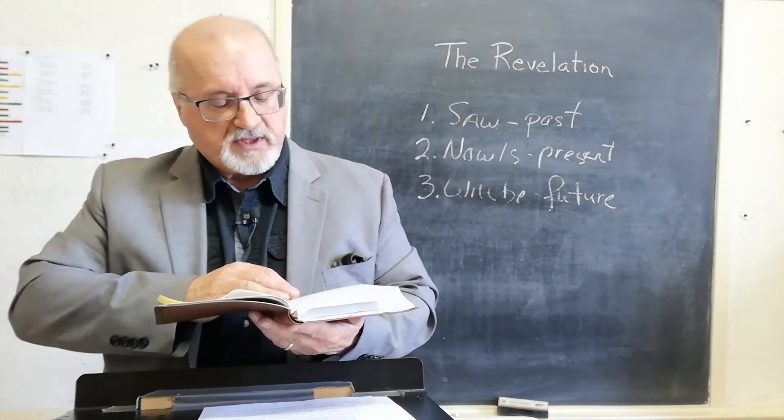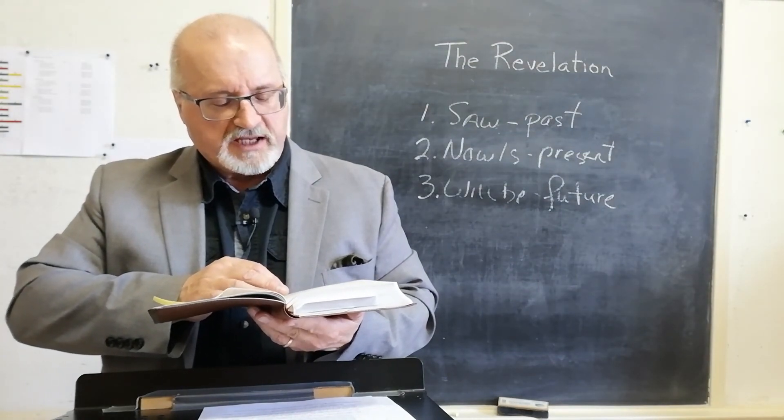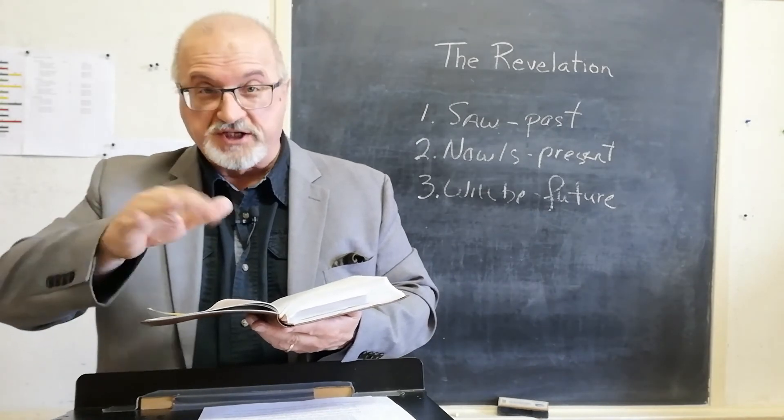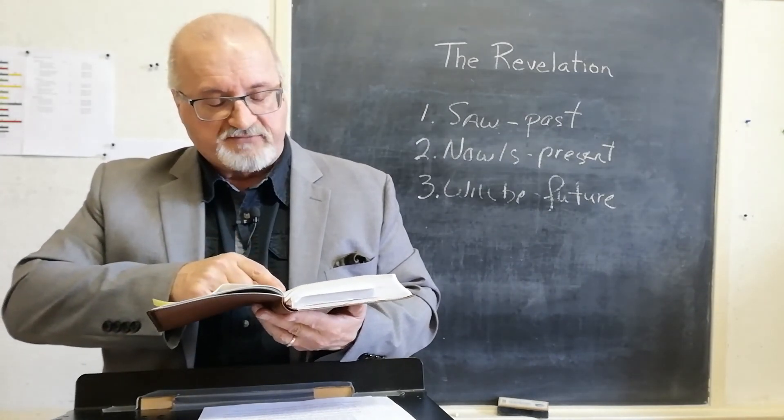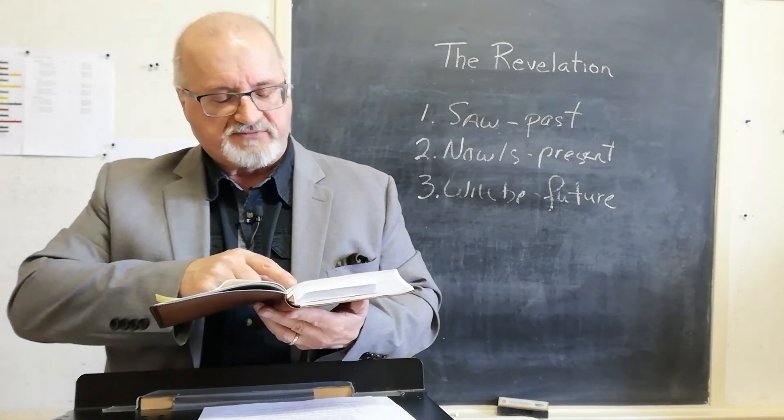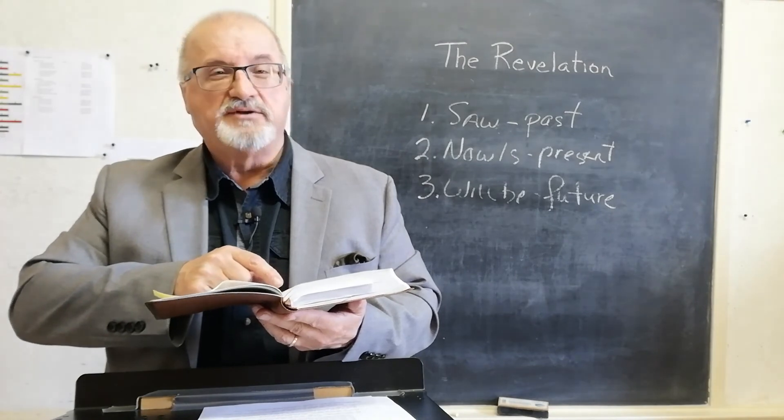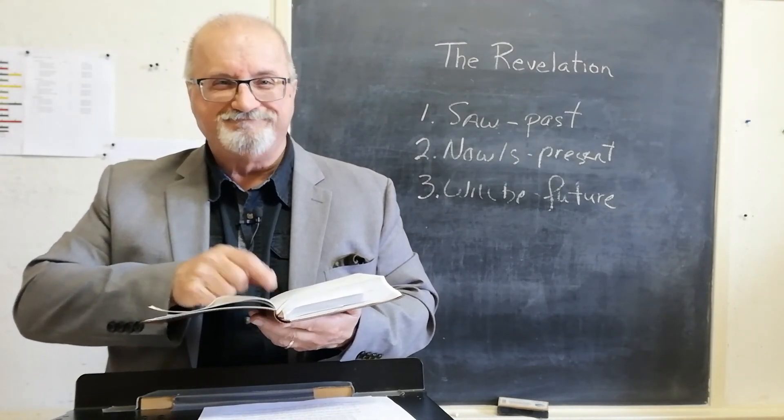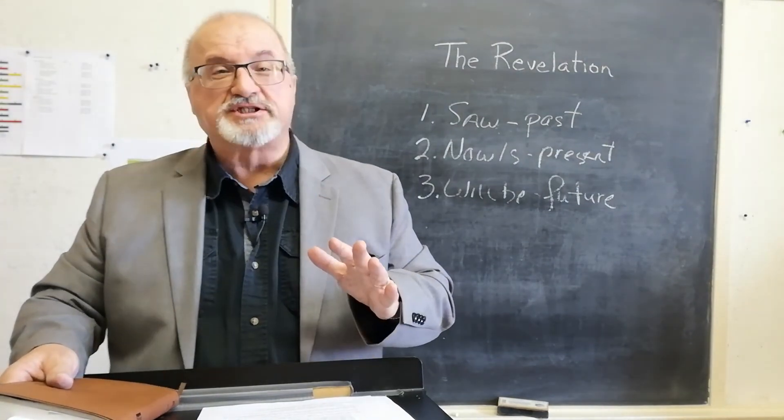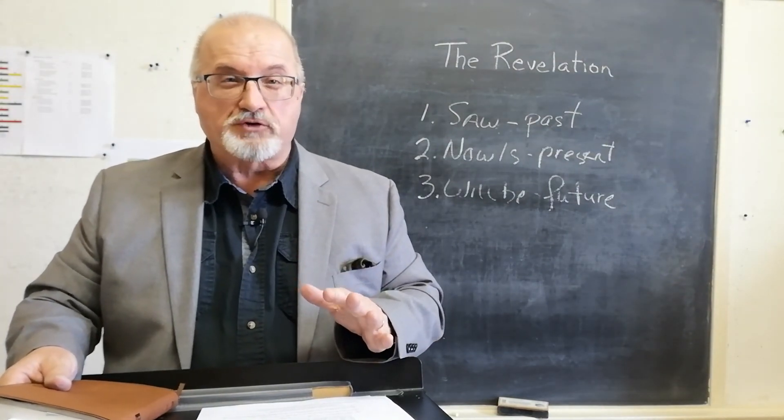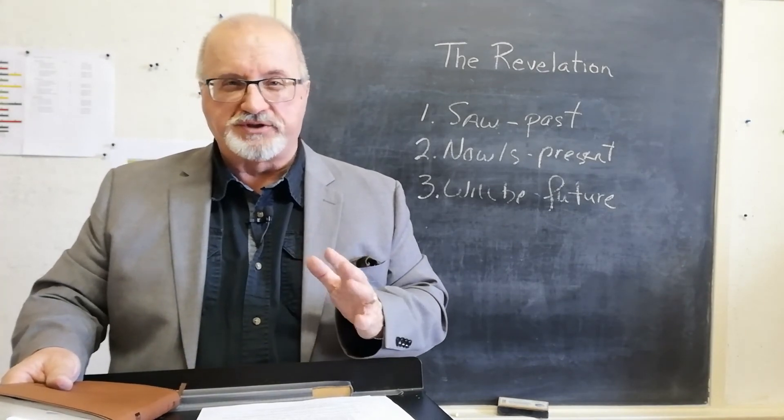He says, The mystery of the seven stars that you saw in my right hand. The seven golden lampstands is this. See, Jesus is going to explain it, not John. The seven stars are the angels of the seven churches. And the seven lampstands are the seven churches. So there's no speculation about that. Jesus makes it known what it's going to be. And he is well able to do that.